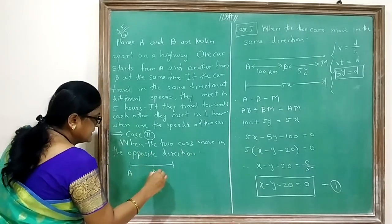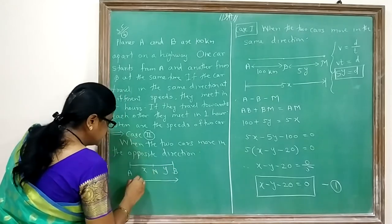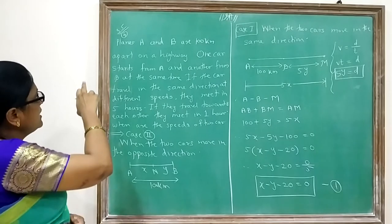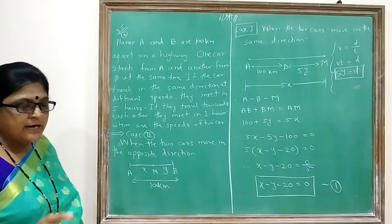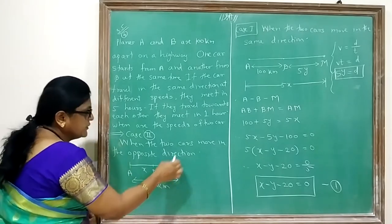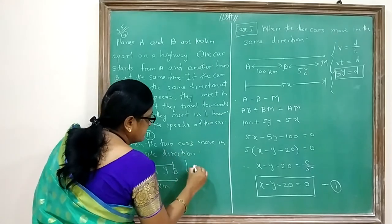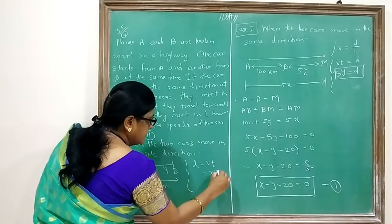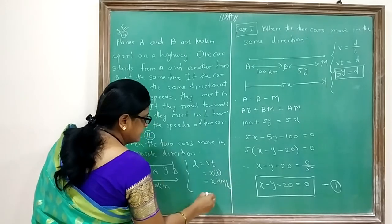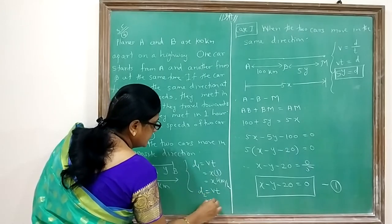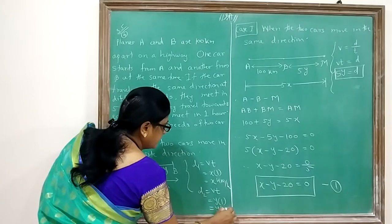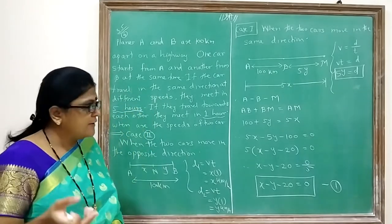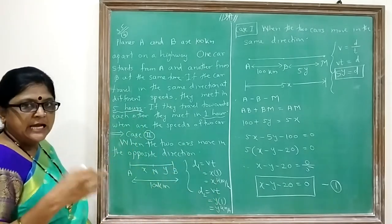For the diagram in Case 2, we have points A, meeting point N, and B. The total distance covered is 100 km. Because the time is only 1 hour, the distance covered by car A is X × 1 = X km, and by car B is Y × 1 = Y km. In the first condition, 5 hours was used, so we wrote 5x and 5y; here only 1 hour is used, so we write just X and Y.